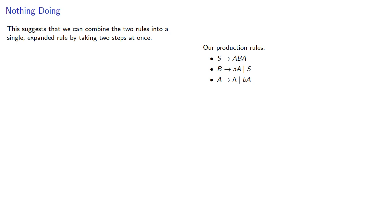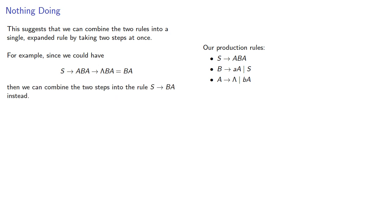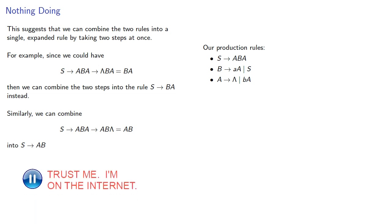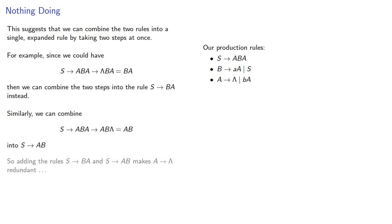This suggests we can combine two rules into a single expanded rule by taking two steps at once. For example, since we could have the production S produces ABA, then using A produces lambda, that gives us lambda BA, which reduces to BA. We can combine the two steps into the single rule S produces BA. Similarly, we can combine S produces ABA produces AB lambda, which is AB, into the single rule S produces AB. So adding the rules S produces BA and S produces AB makes the rule A produces lambda redundant, at least for constructions starting from S.